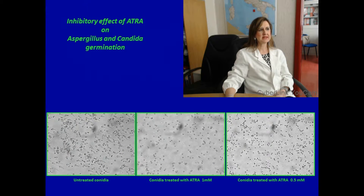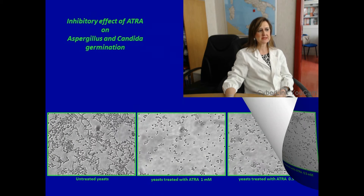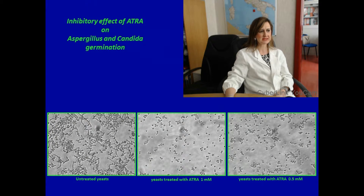You can see in these images the inhibitory effect of ATRA on Aspergillus and Candida germination. In the first slide, you can see the untreated conidia, and in the subsequent slide, the effect of ATRA on conidia treated with ATRA at 1 millimolar, and the different effect with 0.5 millimolar. In the other slide, you can see the untreated yeast and the treated yeast with ATRA at 1 millimolar. The effect is fungistatic, direct on the opportunistic pathogens.